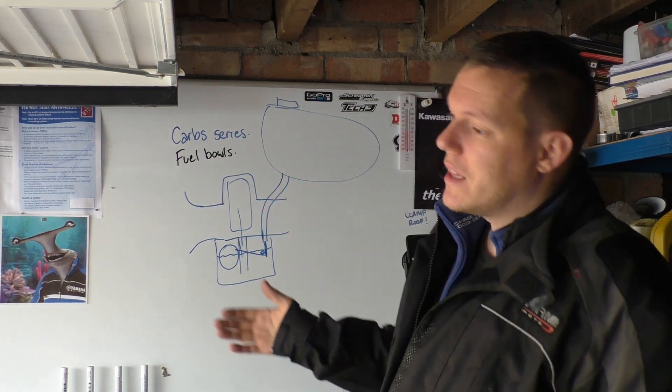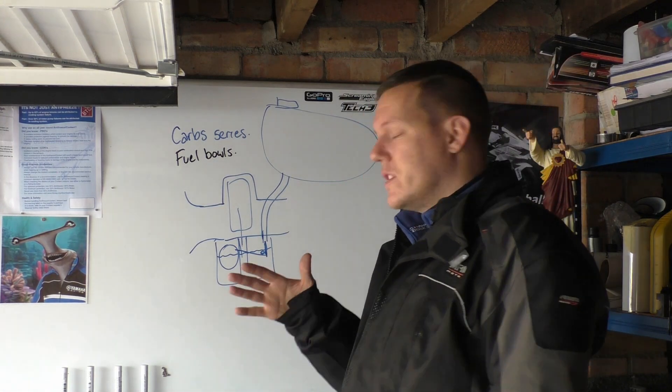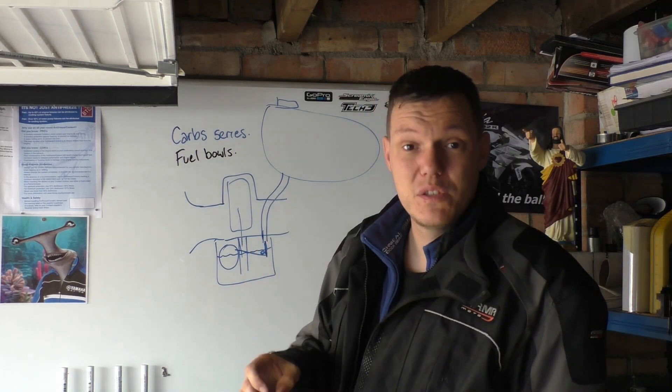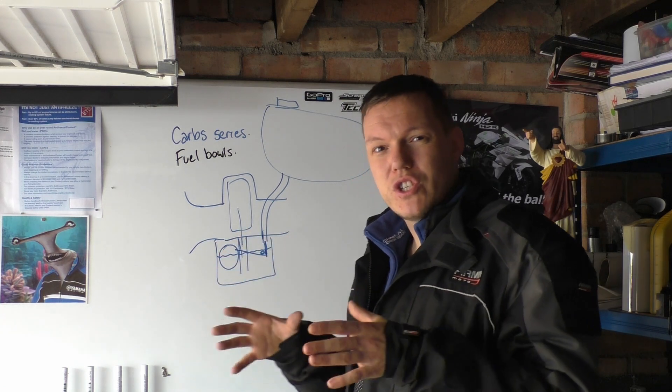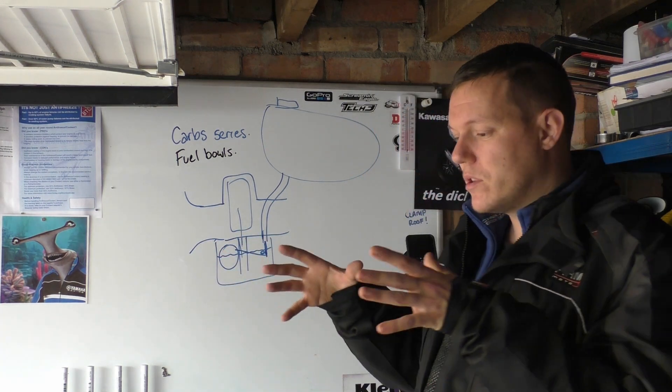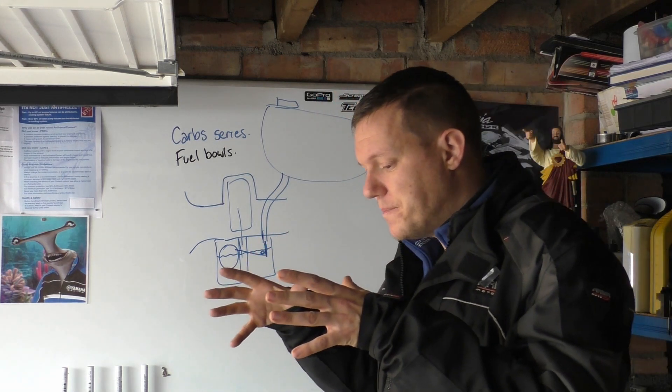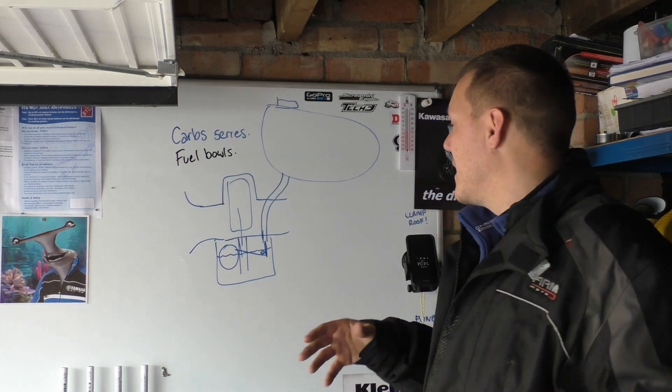As soon as that level starts to drop a bit, we basically let some more fuel in. And then as soon as it gets to a certain level it cuts it off again. Now you can have problems with this system when you start leaning the bike left and right. You are going to start to fool it in a sense to think that the level's a bit funky. That is why all your floats are a certain type of shape. We're going to talk about the buoyancy of them floats in a future video and why the shape of the bowl is the shape of the bowl to help counteract that.